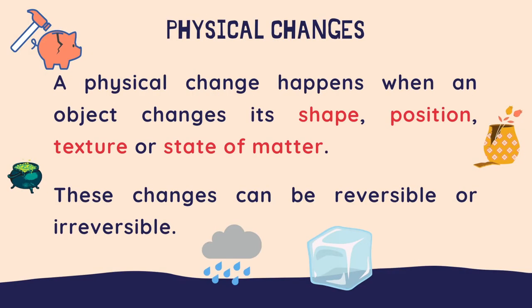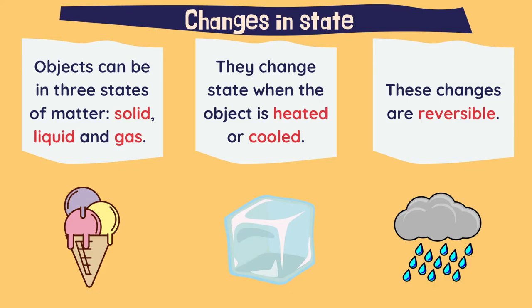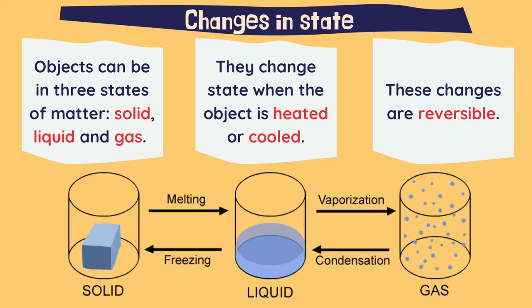Welcome to Natural Science Class with teacher Fernando. In this video we are going to learn about physical changes and chemical reactions. A physical change happens when an object changes its shape, position, texture, or state of matter. These changes can be reversible or irreversible. Objects can be in three different states of matter: solid, liquid, and gas.